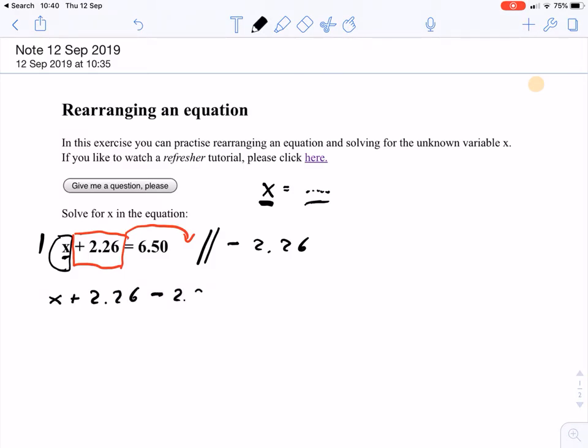So that is the left hand side of the equation, and what we do to the left hand side we also need to do to the right hand side. So we have 6.50 minus 2.26. So what we see is that we have plus 2.26 minus 2.26, and of course if we add this together this gives us 0.